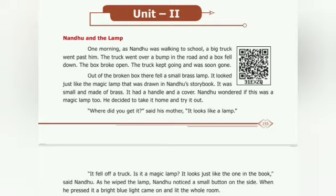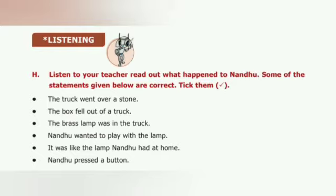It was small and made of brass. It had a handle and a cover. Nandu wondered if this was a magic lamp too. He decided to take it home and try it out. 'Where did you get it?' said his mother. 'It looks like a lamp.' 'It fell off a truck. Is it a magic lamp? It looks just like the one in the book,' said Nandu, as he wiped the lamp. Nandu noticed a small button on the side. When he pressed it, a bright blue light came on and lit the whole room.